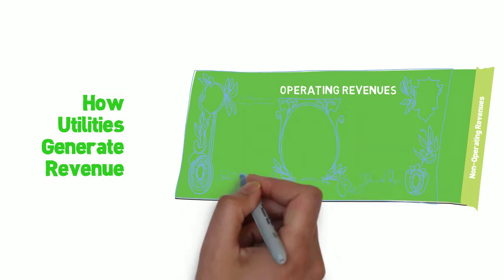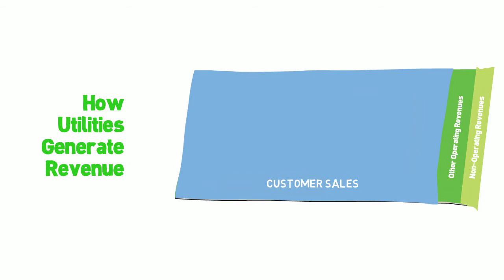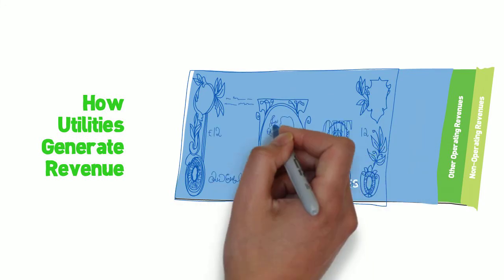In particular, sales to customers based on water use and wastewater discharge is the single most significant source of revenue for most utilities. These are revenues derived from the monthly water and wastewater charges. Revenues from customer sales can typically comprise over 90% of a utility's total operating revenues, with the remainder coming from fees, penalties, and so on. Revenues from customer sales can further be divided into two general categories: fixed and variable revenues.